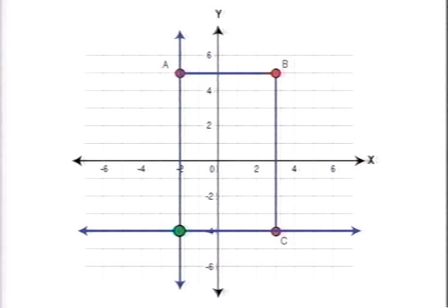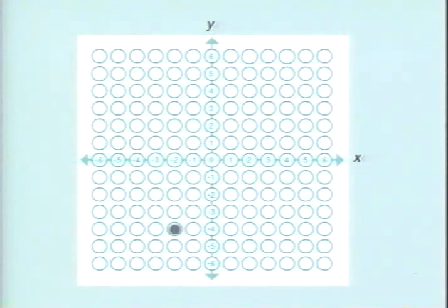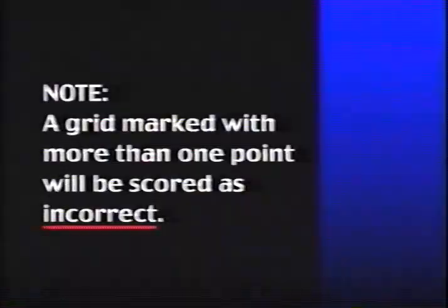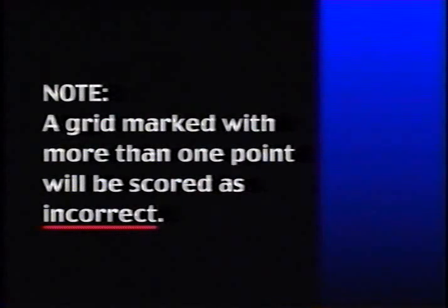The correct answer for this question is the point negative 2, negative 4. That point, and only that point, should be marked on the coordinate grid. And take note, a grid marked with more than one point will be scored as incorrect.